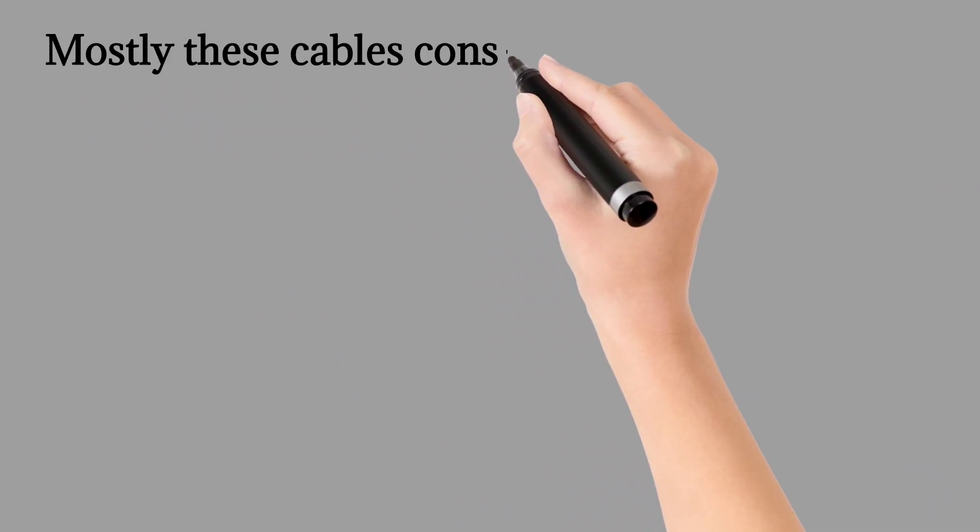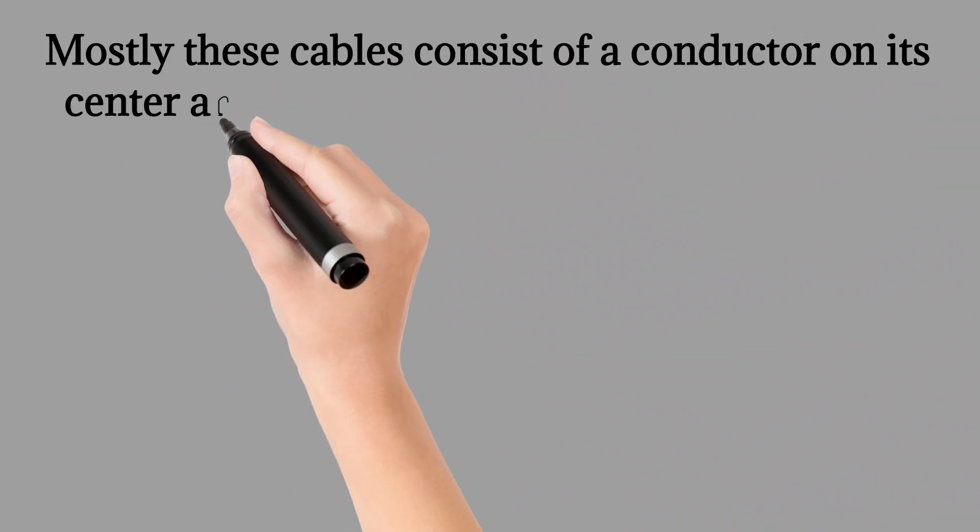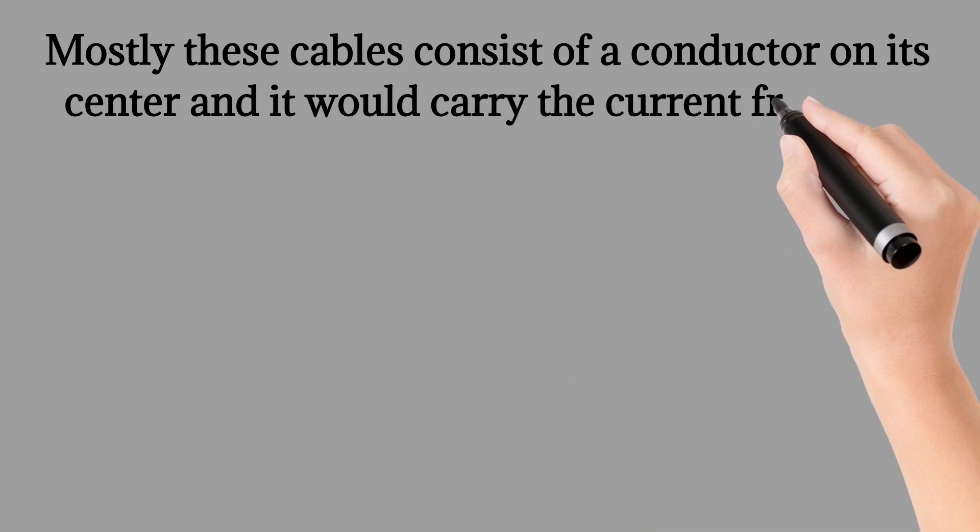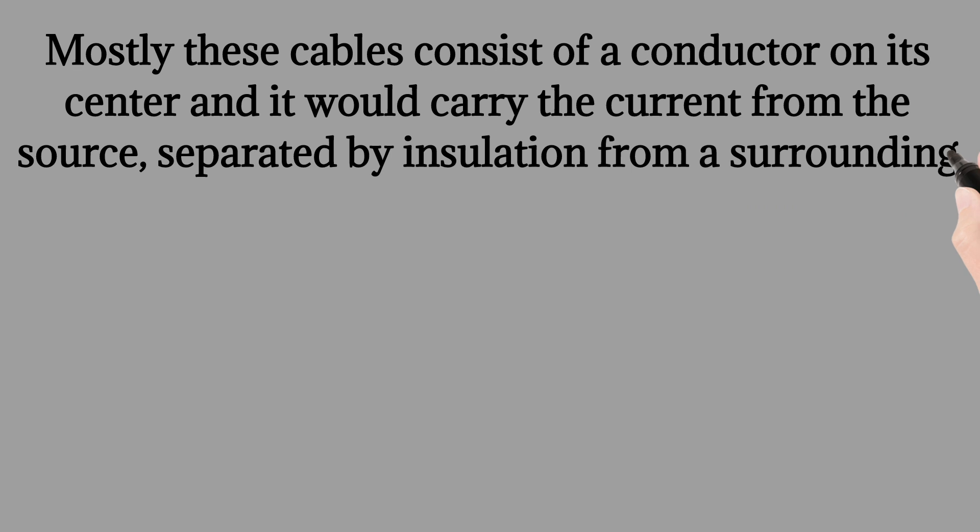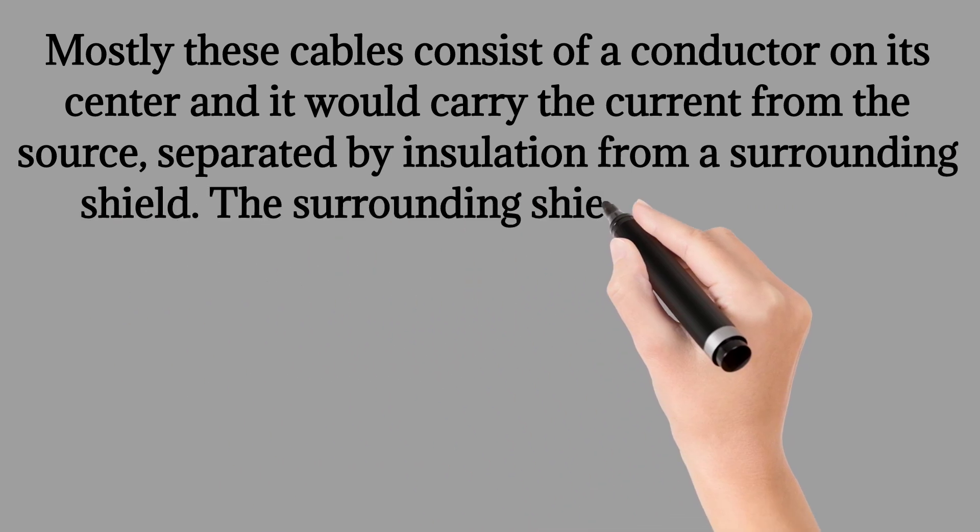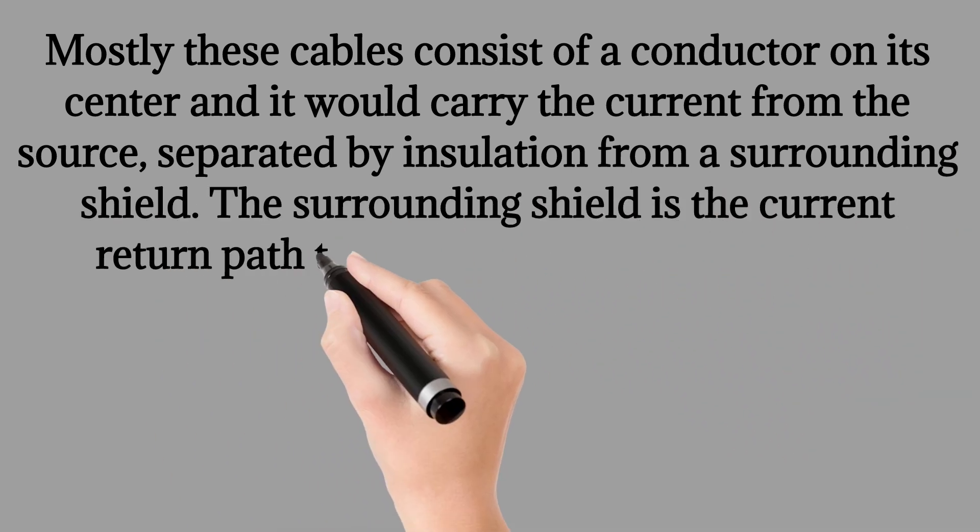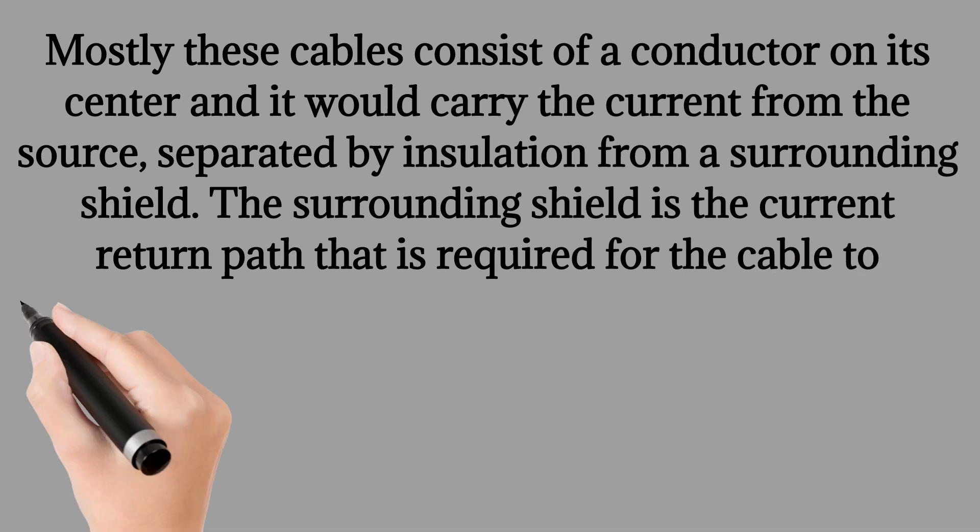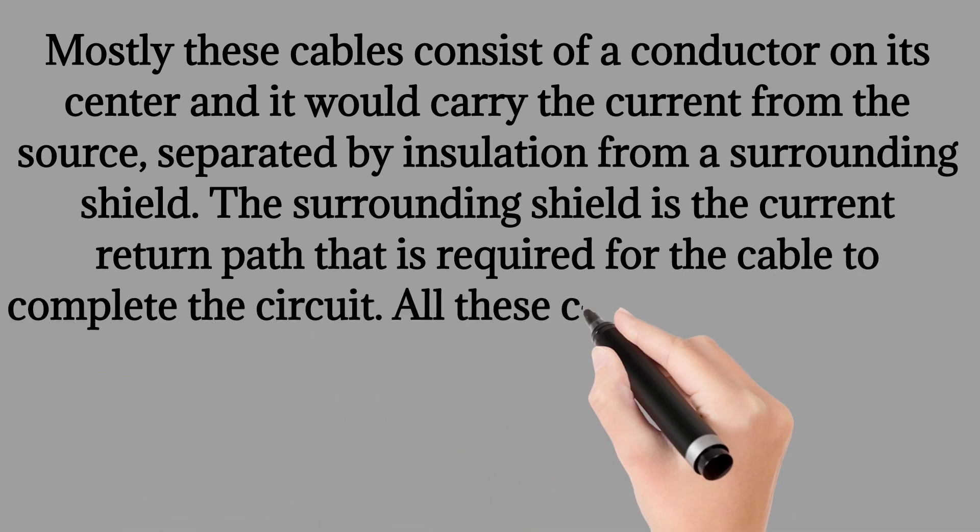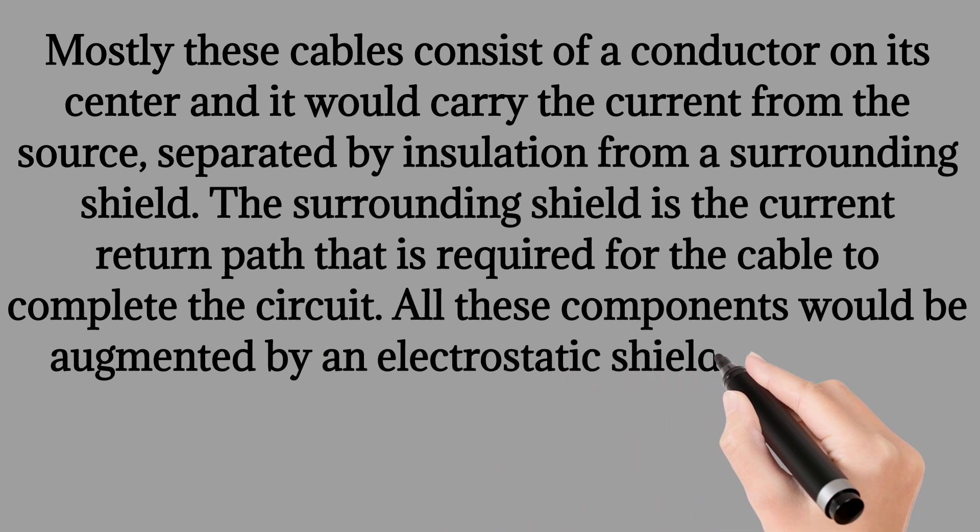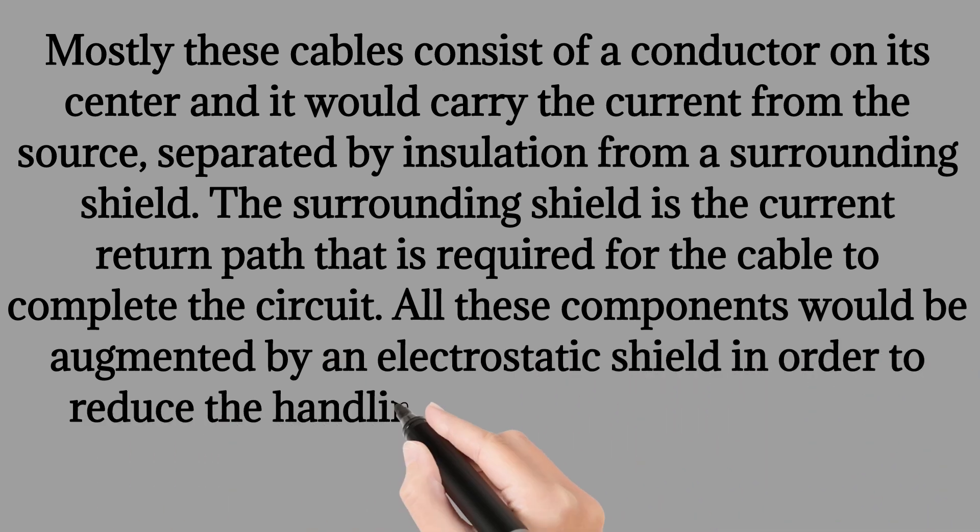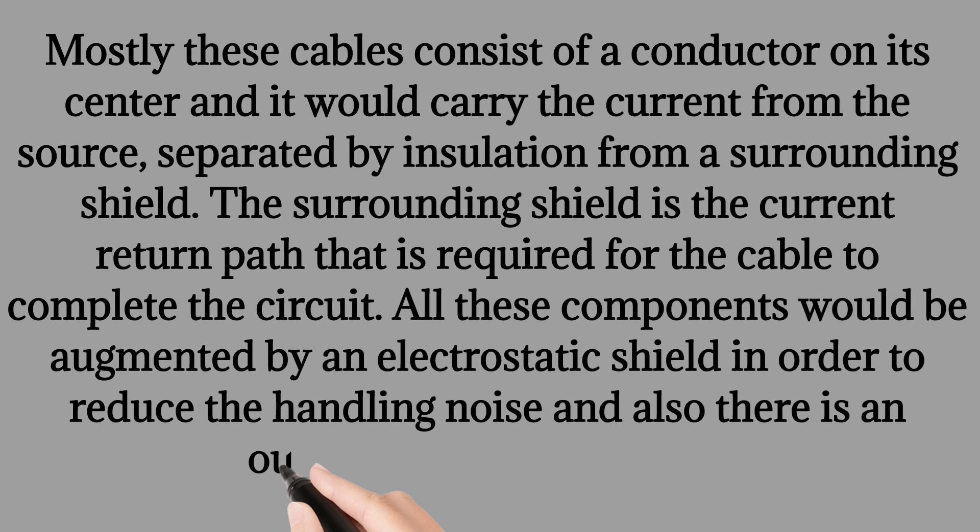Mostly these cables consist of a conductor on its center and it would carry the current from the source, separated by insulation from a surrounding shield. The surrounding shield is the current return path that is required for the cable to complete the circuit. All these components would be augmented by an electrostatic shield in order to reduce the handling noise and also there is an outer jacket for protection.